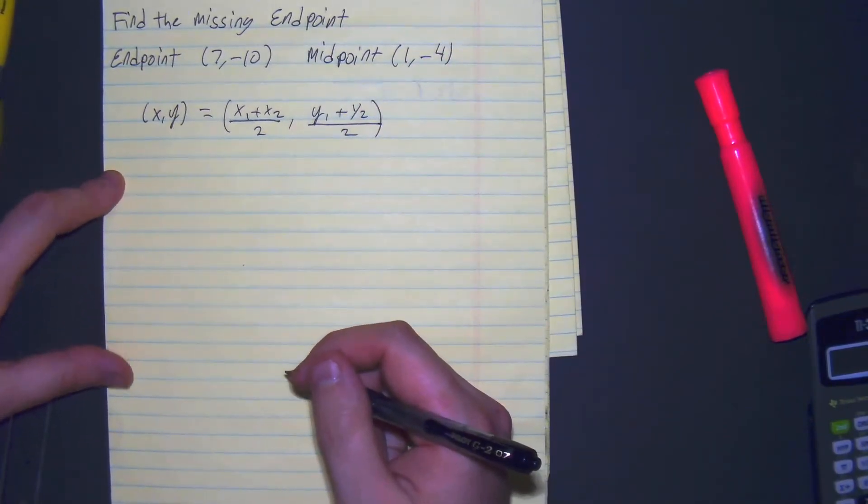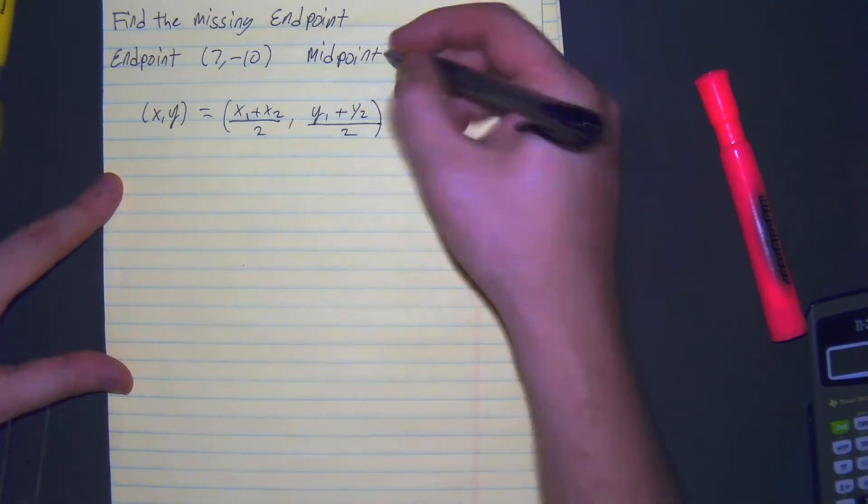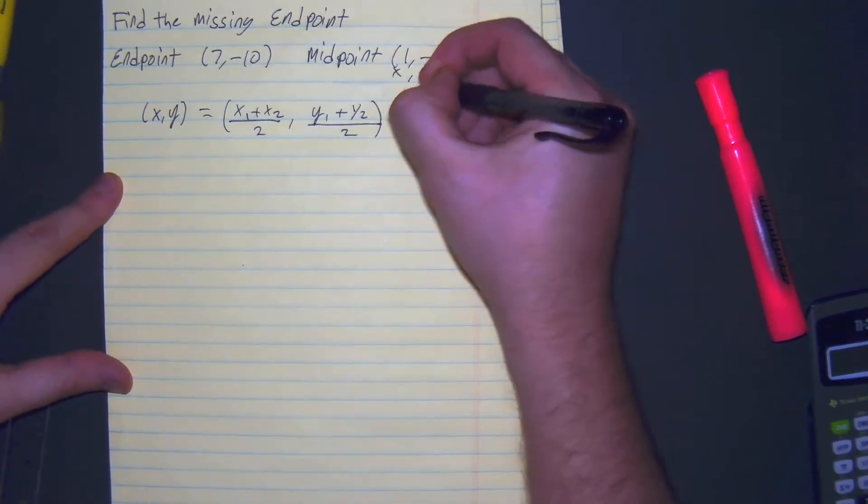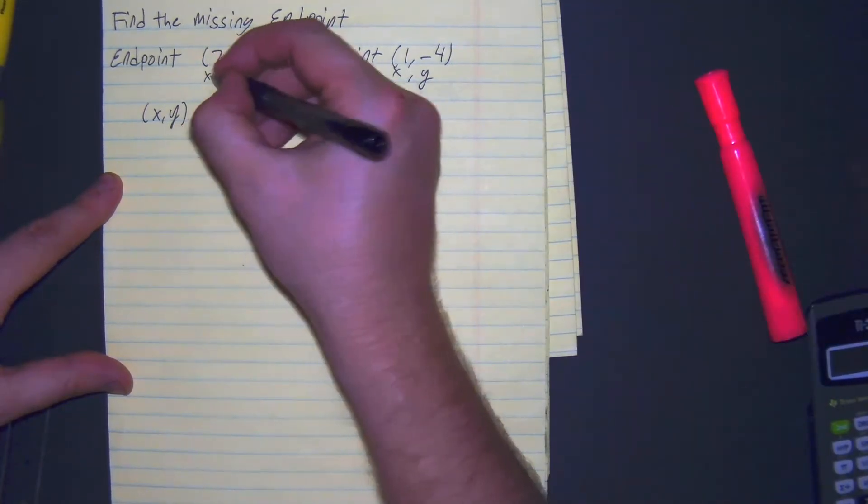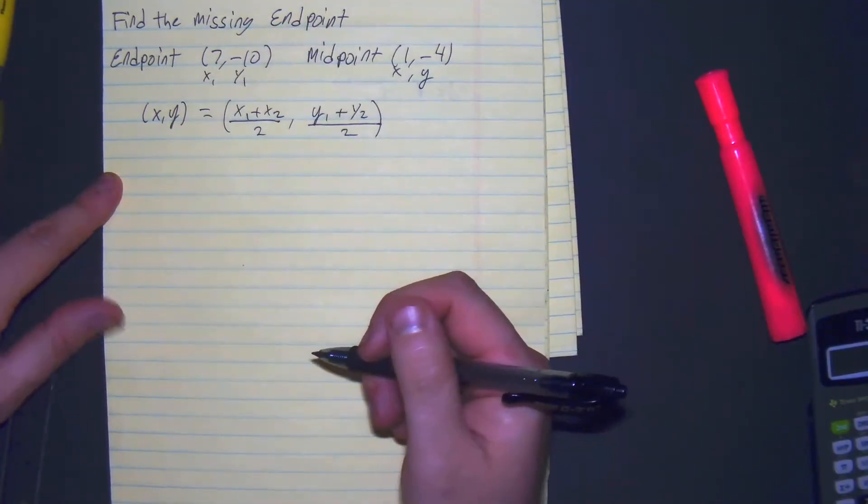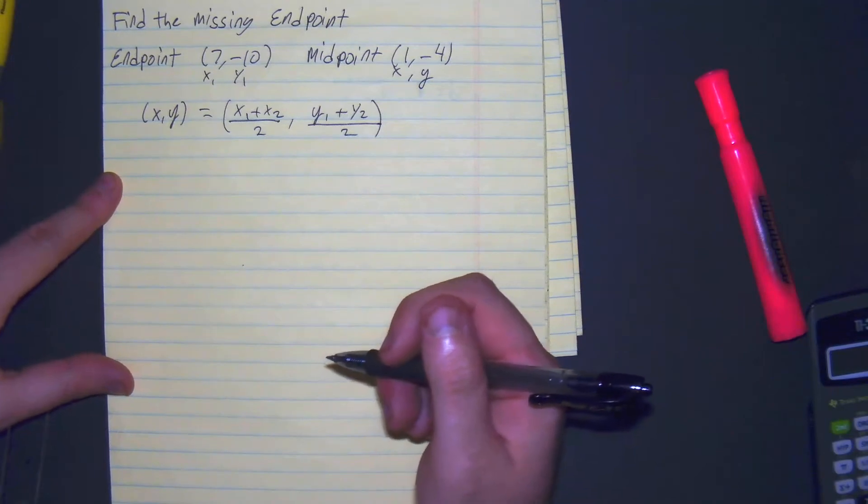To make our lives a little bit easier, let's match everything up. Our midpoint x comma y, or xy, x1, y1. Let's plug it on in to the formula so we know what we're doing.